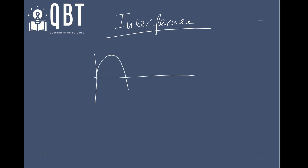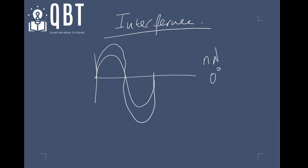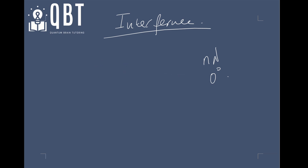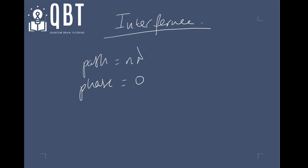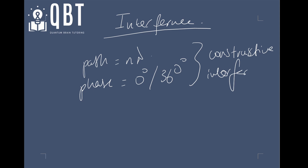So if we have two waves which are completely in phase, so they have a path difference of n-lambda, and they have a phase difference of 0 degrees because they're completely in phase — what does that mean in terms of how they interfere? Well, what it means is that they interfere constructively. When path difference is equal to n-lambda, or when phase difference is equal to 0 degrees or 360 degrees, you end up with constructive interference, which can be thought of as amplification.